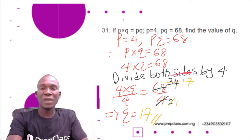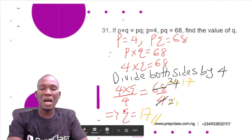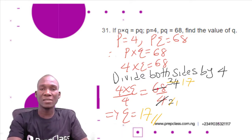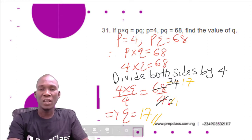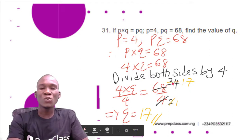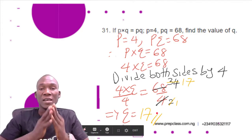Divide both sides by 4 to get the value of q. We have 4q divided by 4 equals 68 divided by 4. The 4s cancel, leaving q alone. Dividing: 2 into 4 gives 2, 2 into 68 gives 34, then 2 into 2 is 1 and 2 into 34 is 17. So q equals 17.